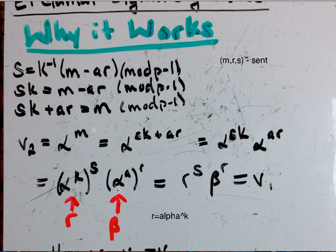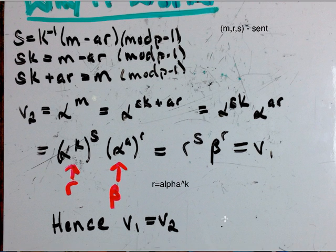So when we rewrite like this, we could also say that it equals r to the s times beta to the r, which inherently we defined as v1. So this is why v1 equals v2.